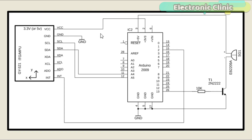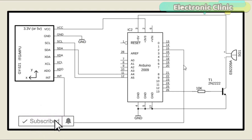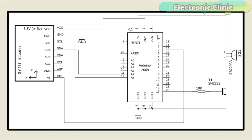The circuit diagram is very simple. VCC is connected with 3.3 volts, and ground is connected with ground. SCL and SDA are connected with the Arduino's analog pins A5 and A4, while the INT pin of the MPU6050 module is connected with pin number 2 of the Arduino. The MPU6050 Eagle Library can be downloaded from my website. The buzzer's positive leg is connected with the Arduino's 5V, and the ground leg of the buzzer is connected with the collector of the 2N2222 NPN transistor, while the emitter is connected with the ground.